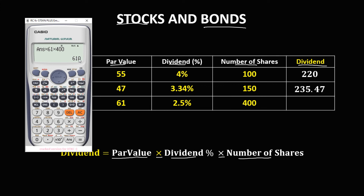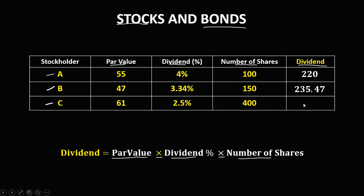So the dividend for Stockholder C is 610. This is how to find the dividend given the par value, the dividend percentage, and the number of shares.